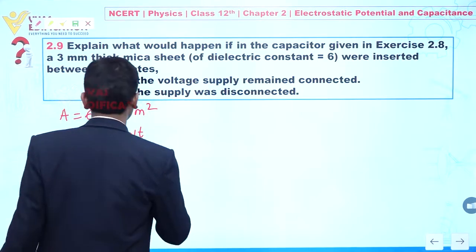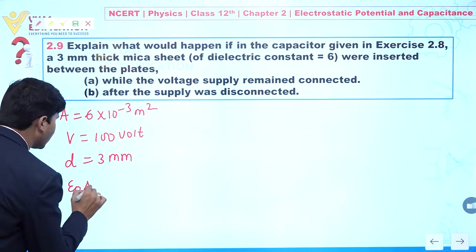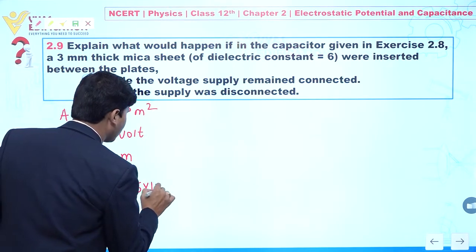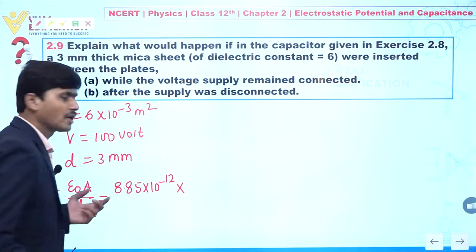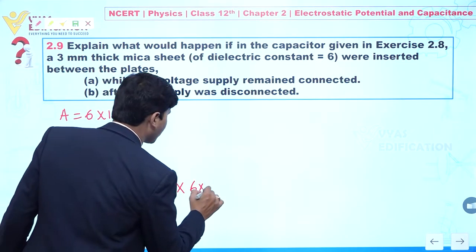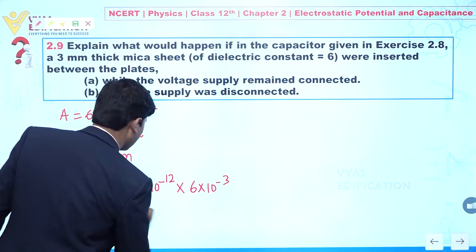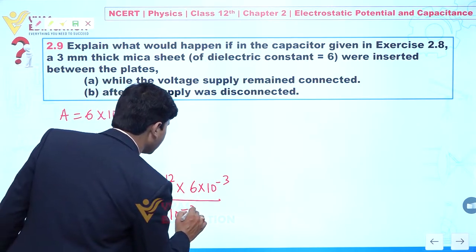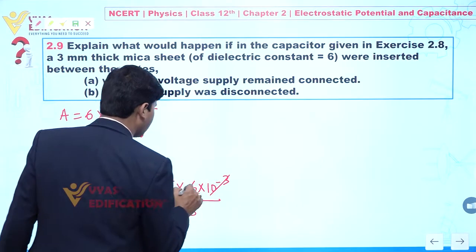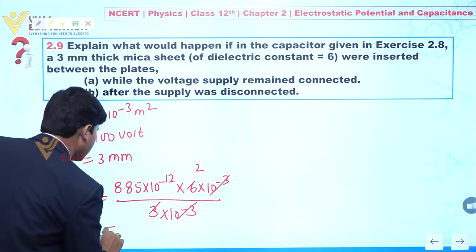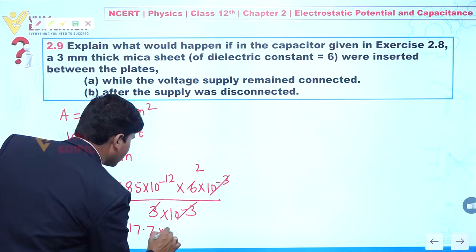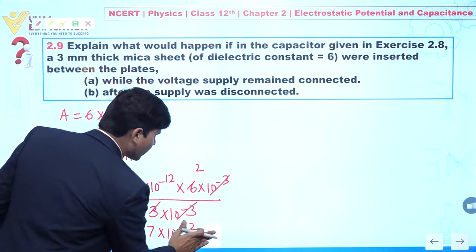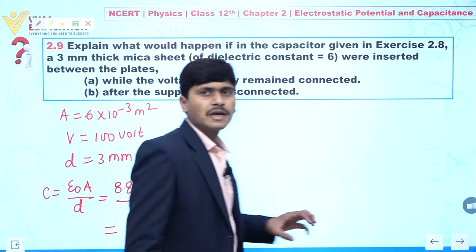We can calculate the value of capacitance again. C is given by ε₀A/D. Substituting: ε₀ = 8.85×10⁻¹² , area = 6×10⁻³, and D = 3×10⁻³. The 10⁻³ terms cancel, giving a factor of 2. From here, this is 17.7×10⁻¹² farad. So this is the value of the capacitor.